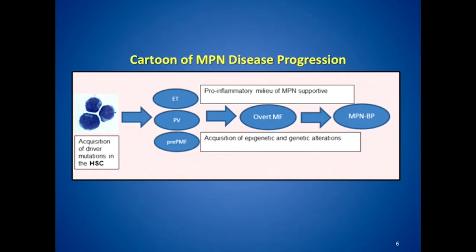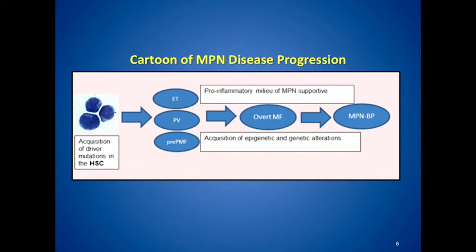This is our current understanding of MPN disease progression. These disorders occur at the pluripotent stem cell level. The proliferative phases include ET, polycythemia vera, and early or pre-PMF myelofibrosis. With the acquisition of additional epigenetic and genetic alterations, fueled by a pro-inflammatory milieu, the large majority of patients will progress to overt myelofibrosis, and a small percentage will develop MPN blast phase — a form of acute leukemia.